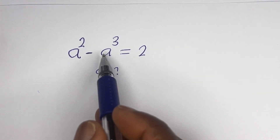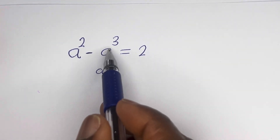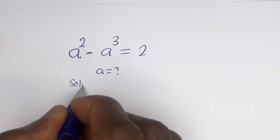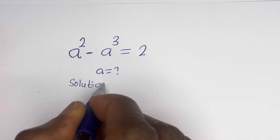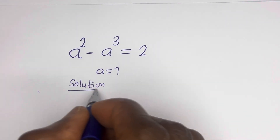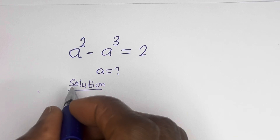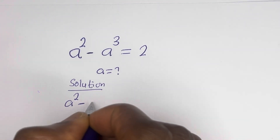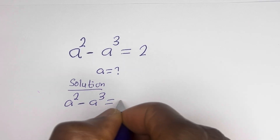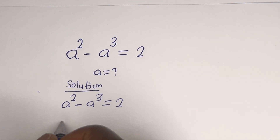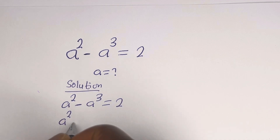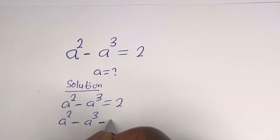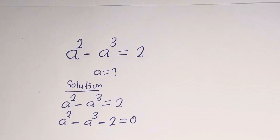Hello. How to solve for a in this equation: a squared minus a to the power of 3 is equal to 2. Then we have a squared minus a to the power of 3 is equal to 2, so a squared minus a to the power of 3 minus 2 is equal to 0.